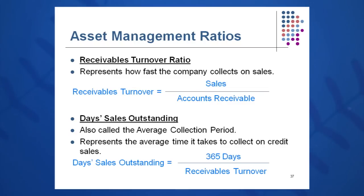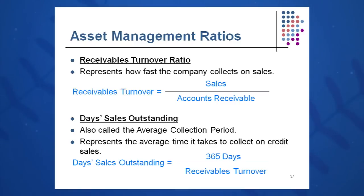Receivables turnover is sales over accounts receivable. If I want to calculate day sales outstanding (DSO), I take 365 days divided by receivables turnover. They also call this the average collection period; our author calls it day sales in receivables, but the more popular term you'll see when you go to work is day sales outstanding. This is a very important ratio in just about every business. The inventory turnover ratio is more important in companies with significant inventory — if you don't have a lot of inventory, it's not as critical.